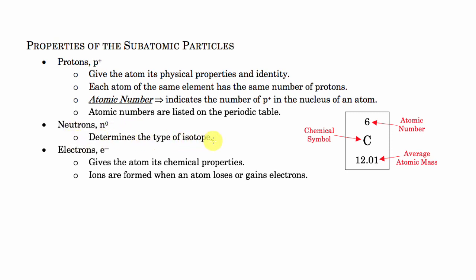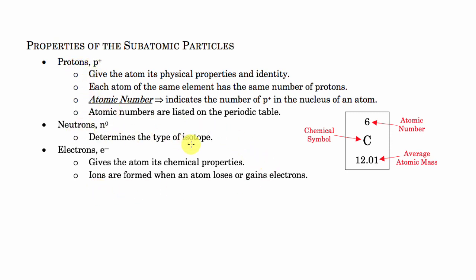The neutron basically determines the type of isotope you deal with — certain elements can have certain numbers of neutrons, and we'll get into the various isotopes. The electron controls the chemical properties, and this is really important for us. We're going to focus a lot of attention on the electrons because we're going to talk a lot about chemical reactions and chemical properties. Since electrons are on the outside of the atom, those electrons can be gained or lost, and that creates what are called ions. So: protons give the identity, neutrons control the isotopes, and electrons control the chemical properties.